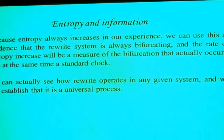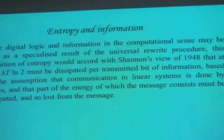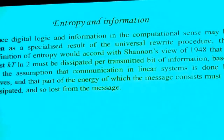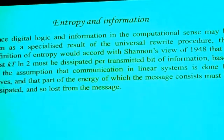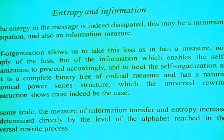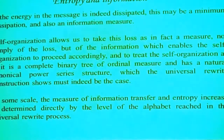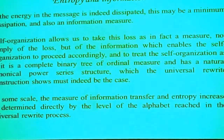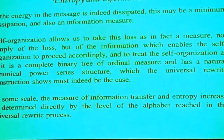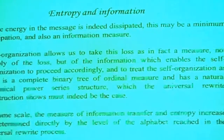The number of equally probable microstates at the nth stage is 2 to the nth. This gives us an idea of increasing complex diversification and disorder — and it doesn't matter what kind of system, it always works. We can use the observed increase in entropy as evidence that the rewrite system is actually bifurcating. The rate of entropy increase is a measure of bifurcation, providing a standard clock. This accords with Shannon's view of 1948 that at least k times 2 log 2 must be dissipated per bit of information.